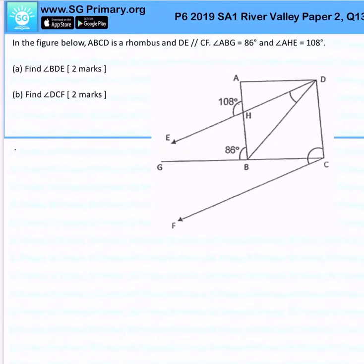In the figure below, ABCD is a rhombus and DE is parallel to CF. Angle ABG is 86 degrees as shown in the figure, and angle AHE is 108 degrees similarly shown in the figure.